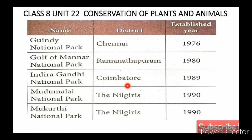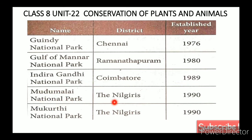In Tamil Nadu, the national parks include: Guindy National Park, Chennai (1976); Gulf of Mannar National Park (1980); Indira Gandhi National Park (1980); Mudumalai National Park (1990); and Mukurthi National Park (1990).